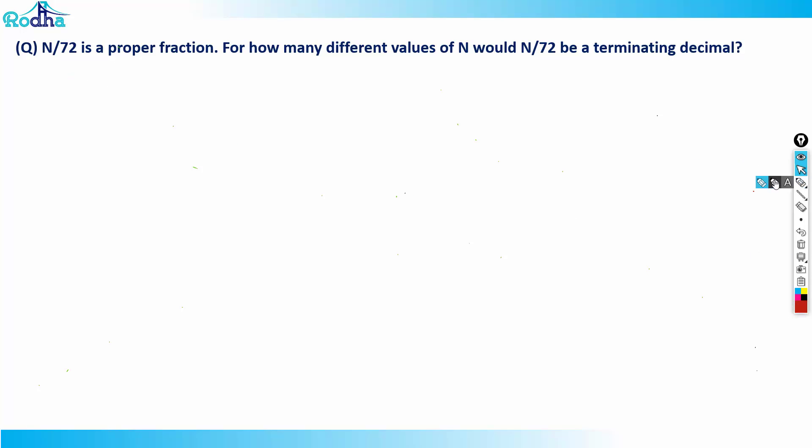Let's look at this question: n/72 is a proper fraction. For how many different values of n would n/72 be a terminating decimal?